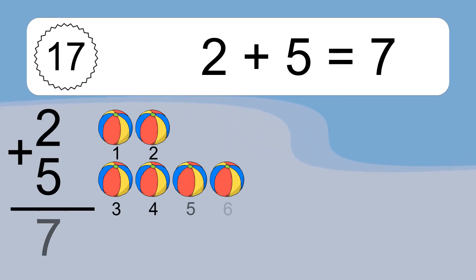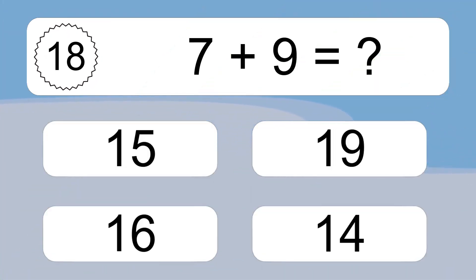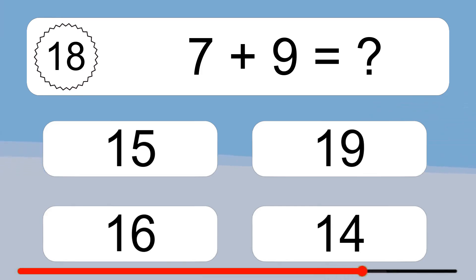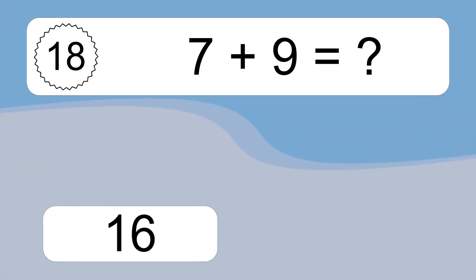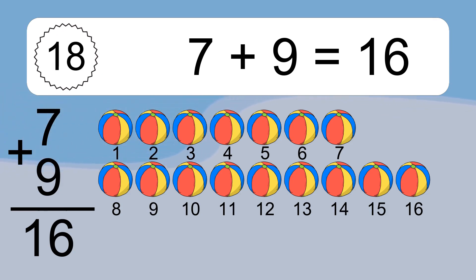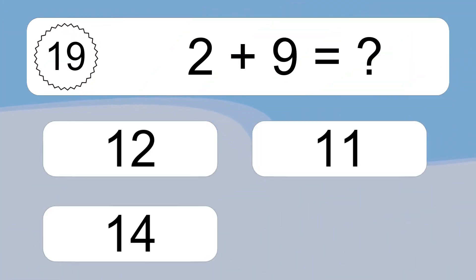2 plus 5 equals 7. Let's count it: 1, 2, 3, 4, 5, 6, 7. 7 plus 9 equals what? 7 plus 9 equals 16. Let's count it: 1, 2, 3, 4, 5, 6, 7, 8, 9, 10, 11, 12.